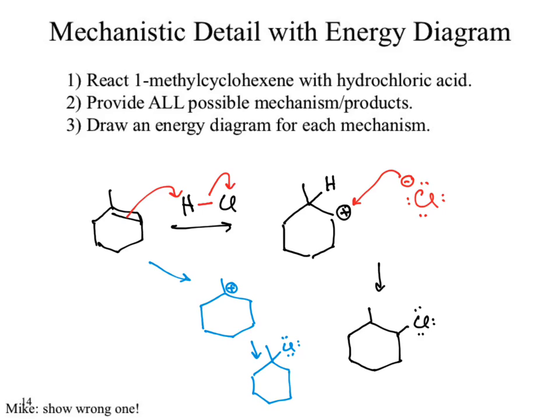There are two potential paths this reaction could go through. The blue one is ultimately a better path, though admittedly without curved arrows. But I want you to at least think about these things. The next part would be drawing an energy diagram for each of those mechanisms. Just like our SN1s, this is two steps. We would look at how it breaks down all the way through, so we'll do a tiny one in the corner here.